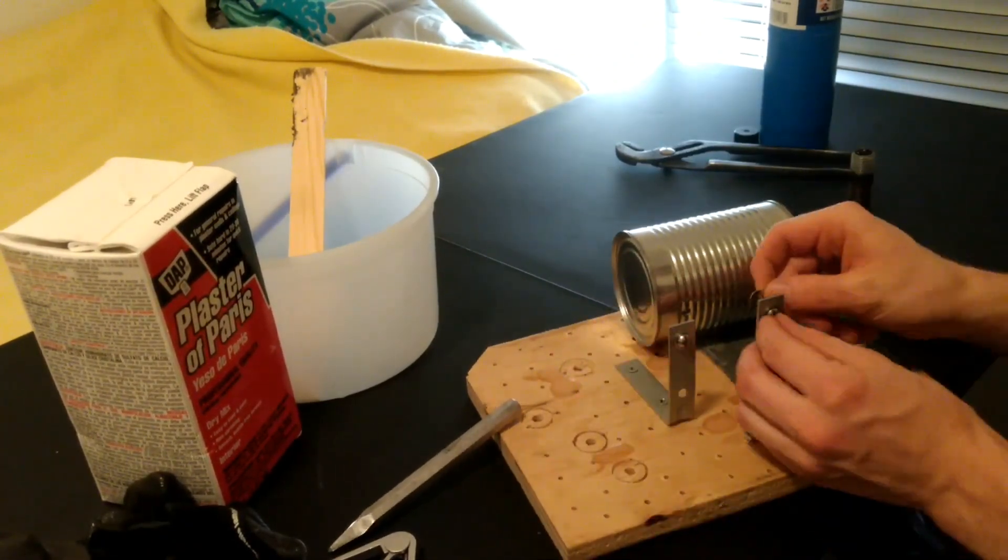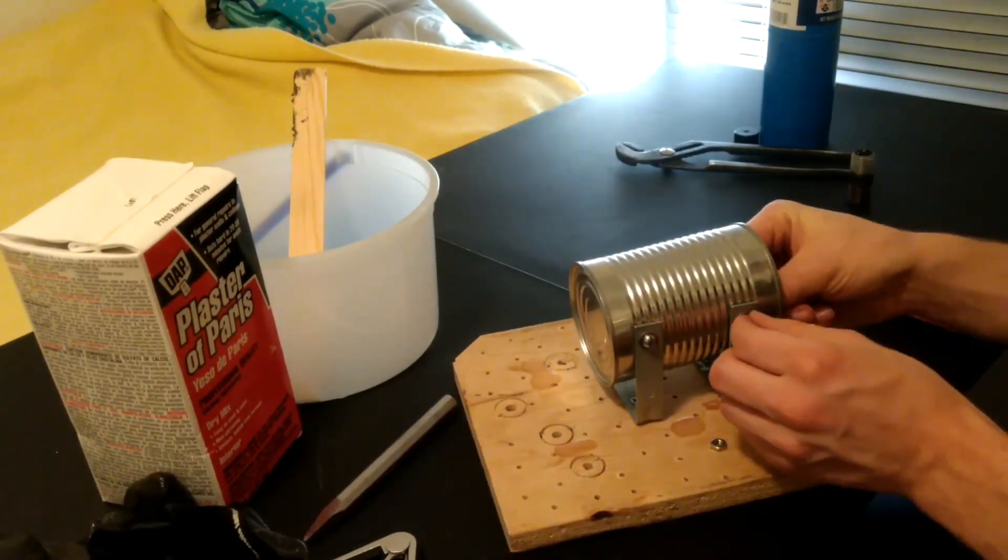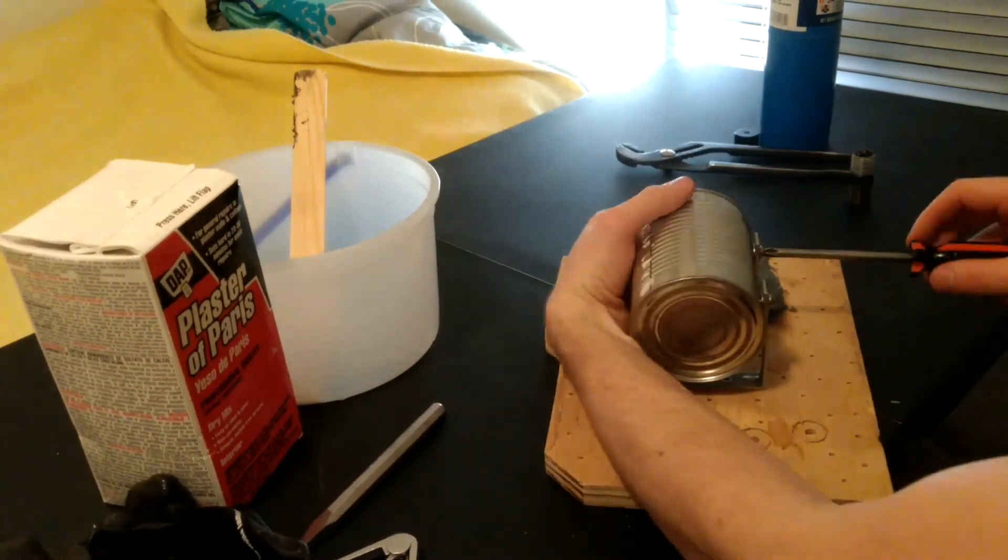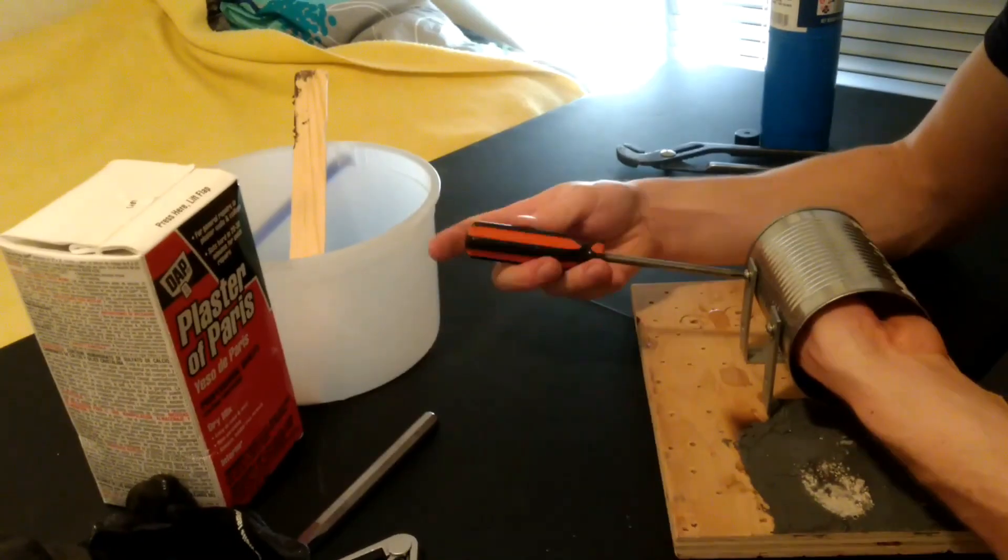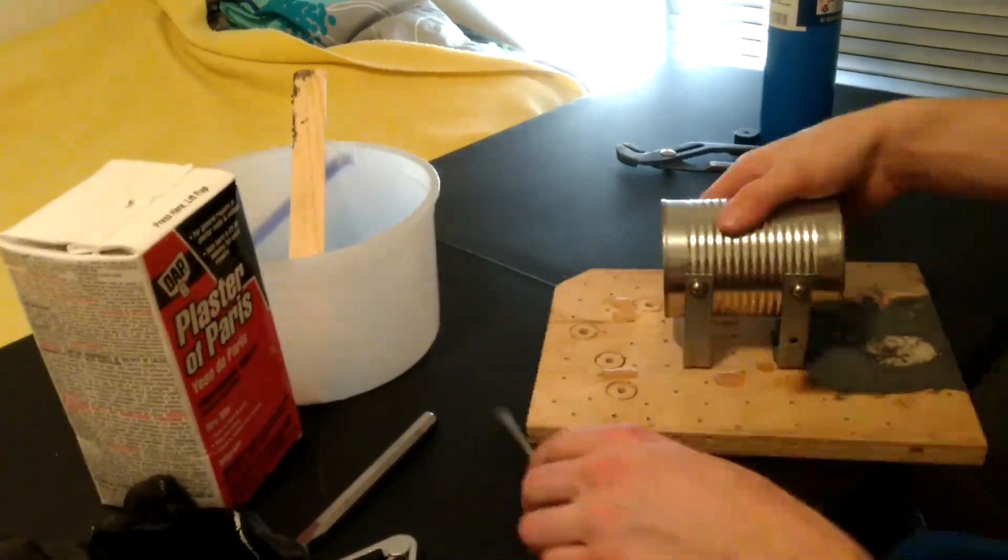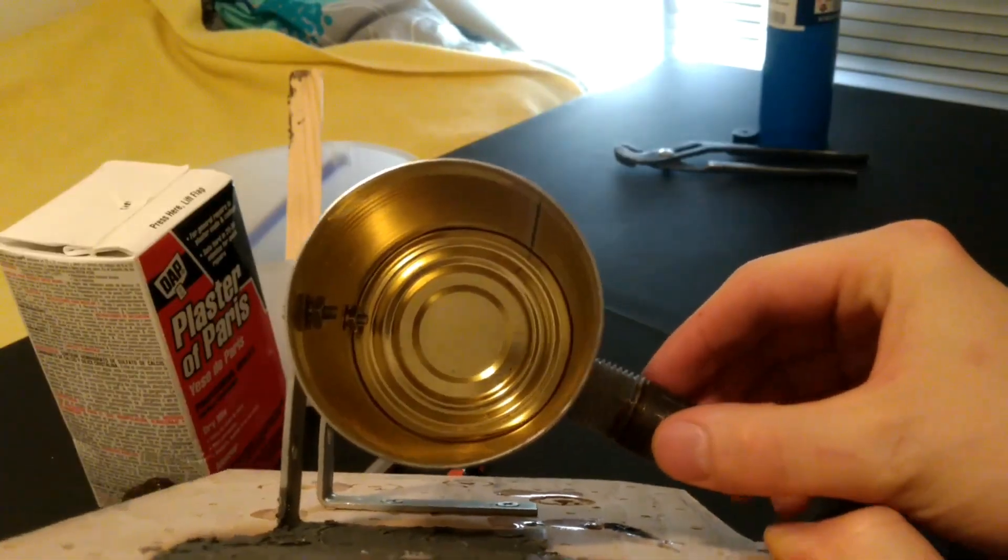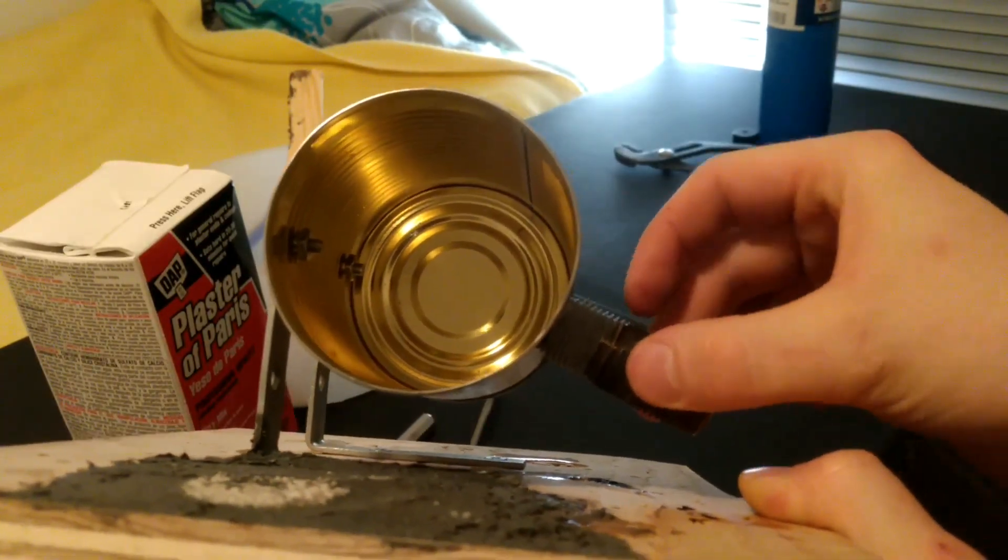Once you have the screw holes in, you want to mount up the can so that you can mark the proper position to put in the pipe nipple. The idea is for the torch to be able to rest on the table next to the can and have the nozzle end of the torch come in at this sort of an angle. So we want to get the pipe nipple right about there.